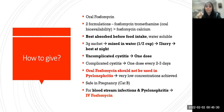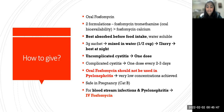Oral fosfomycin should never be used in pyelonephritis, as it attains very low levels. If you need to use it for bloodstream infection as combination therapy or in cases of pyelonephritis, you have to use IV fosfomycin. Fosfomycin is one of the safe drugs that can be used in pregnancy-associated UTI, falling under category B.